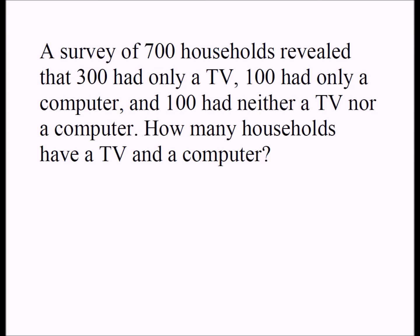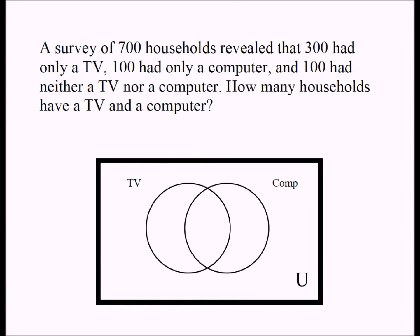I'm going to use a two-set Venn diagram to solve this problem. This circle represents all the households that had a TV, and this circle represents all the households that had a computer. The part where the two circles overlap represents the households that had both the computer and the TV. And the area outside both circles represents households that had neither a computer nor a TV.